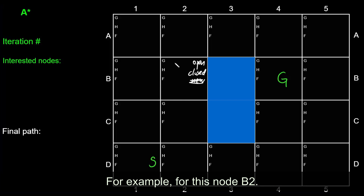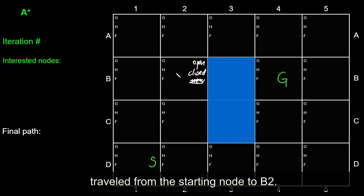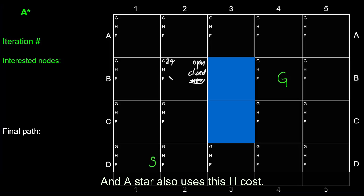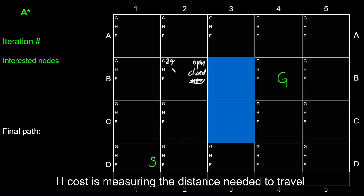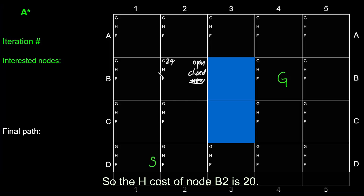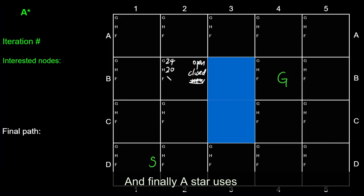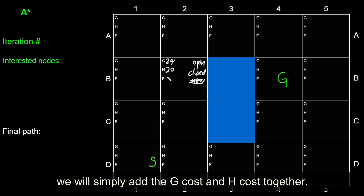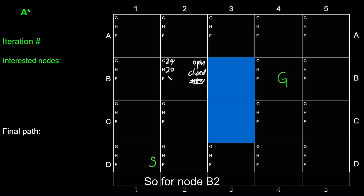For example, for node B2, its g cost is measured as the distance traveled from the starting node to the current node B2. The g cost for node B2 is 24. The A* algorithm also uses h cost, which measures the distance needed to travel from the current node B2 to the target node B4. So h cost for B2 is 20 — two steps, so 20. Finally, A* uses f cost to decide which node will be explored. To get f cost, we simply add g cost and h cost together. So for B2, f cost is 24 plus 20, which is 44.